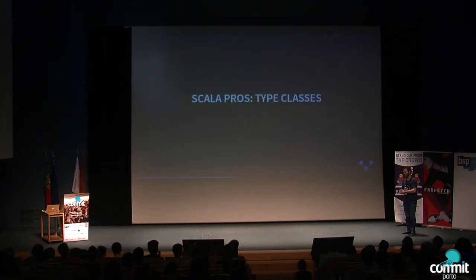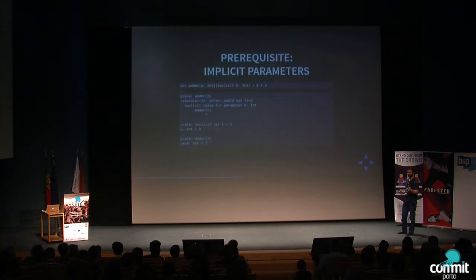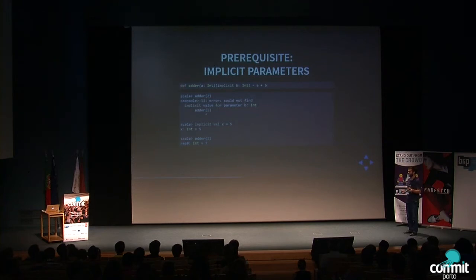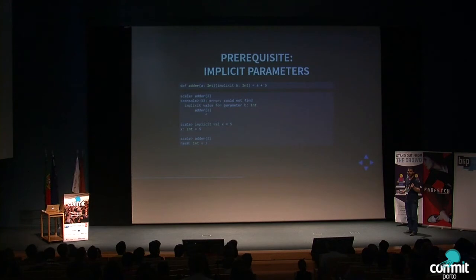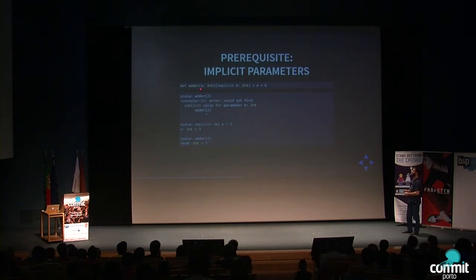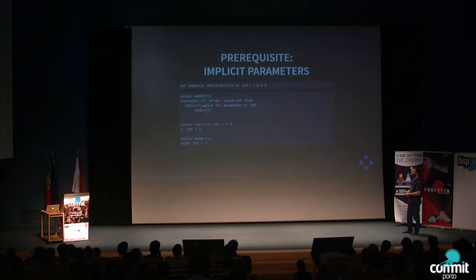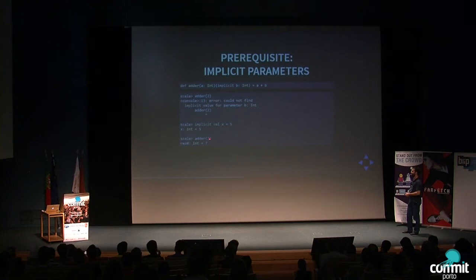Another pro of Scala are type classes, a way to achieve ad hoc polymorphism. But first, a prerequisite: implicit parameters. You can think of implicit parameters as regular function parameters with one difference: if you don't supply an implicit parameter at call time, the compiler tries to find an implicit value of the matching type in scope and supplies it for you. In this example, calling `adder` without supplying the implicit parameter fails to compile. However, if I declare an implicit value of type Int with value five, then calling `adder` with two will sum them and return seven.